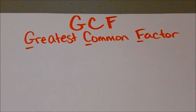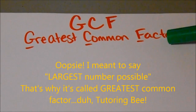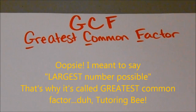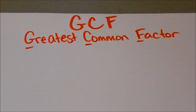This is really helpful when you are trying to find the smallest number possible that will go into two different numbers, because a factor is just a number that you can use to multiply by to get the larger number.